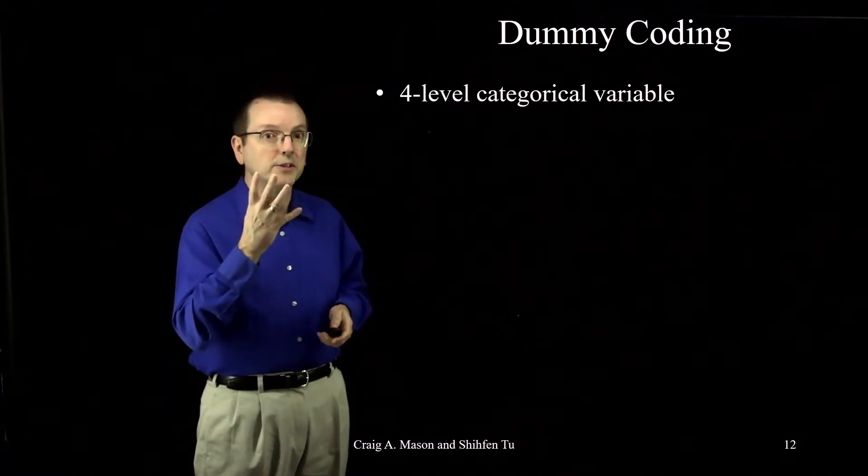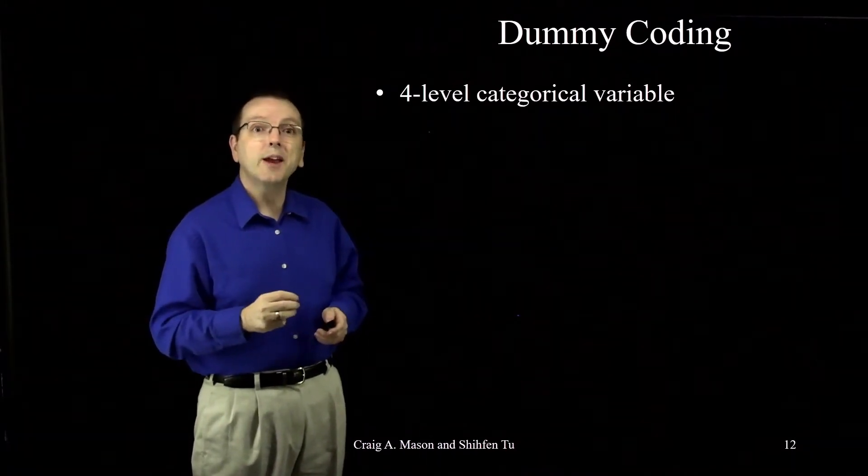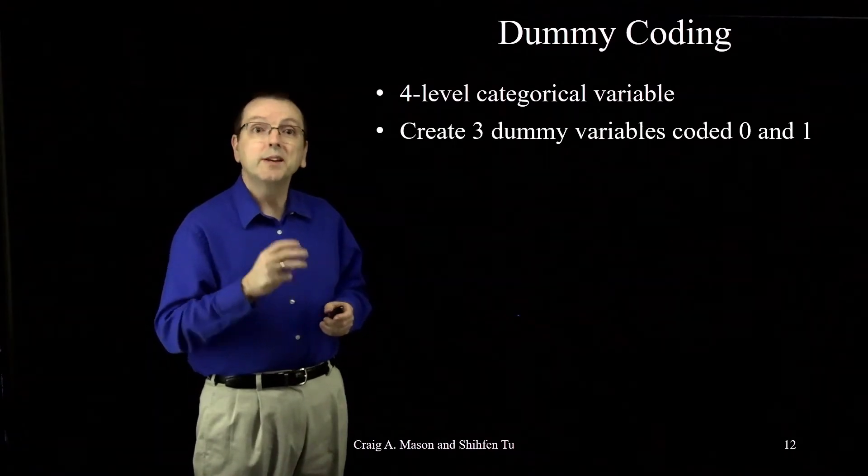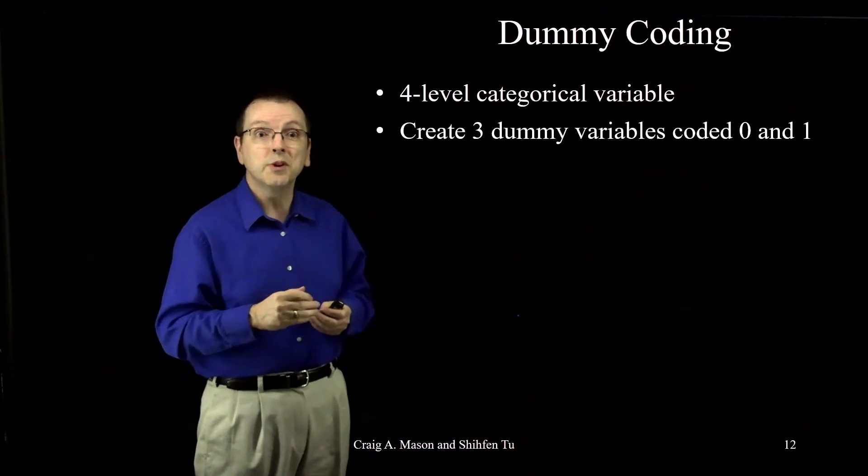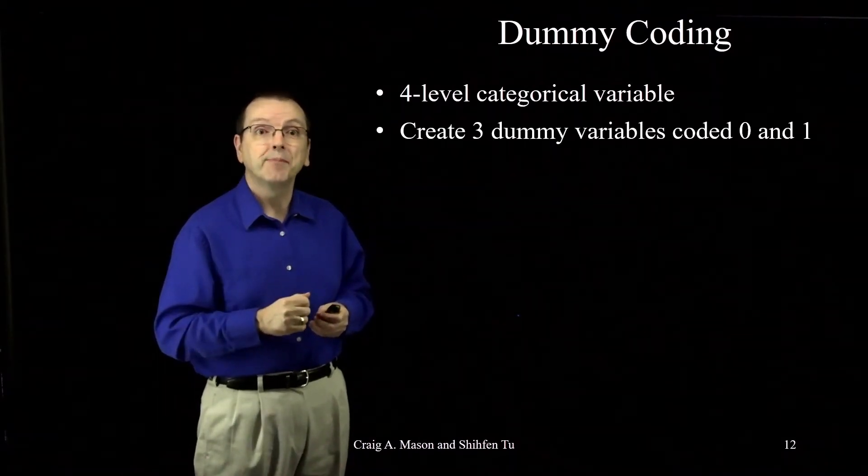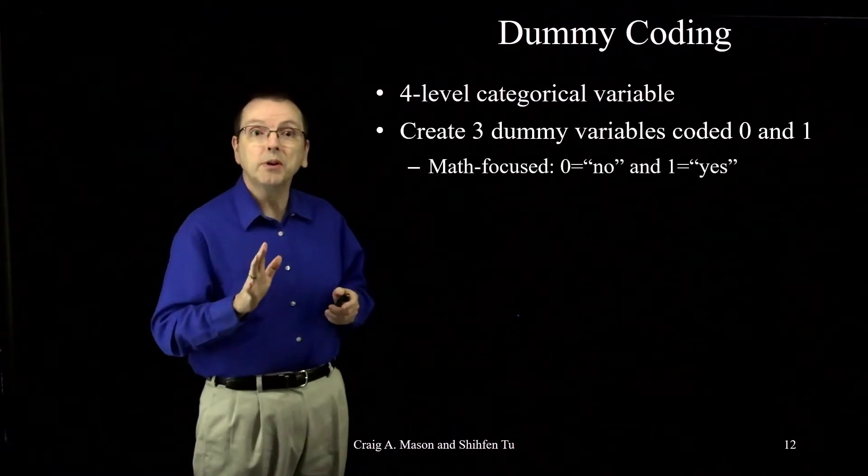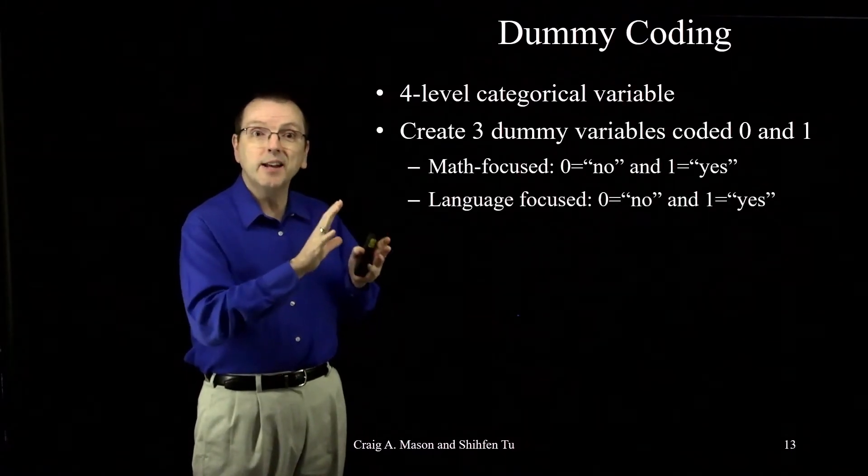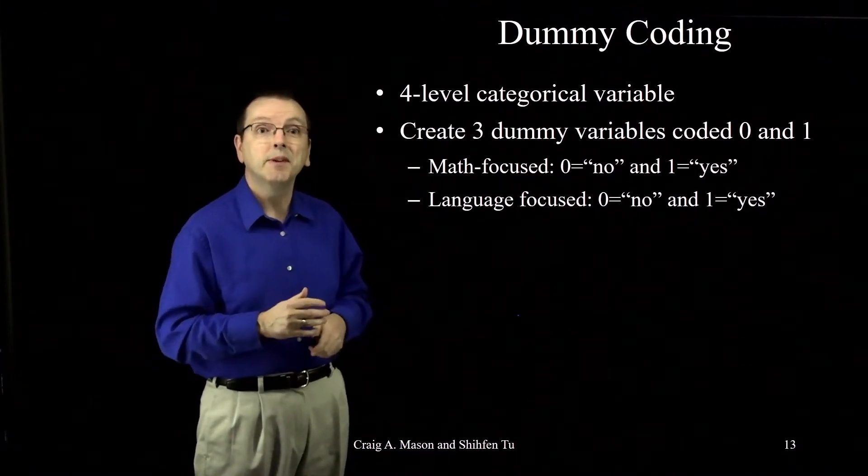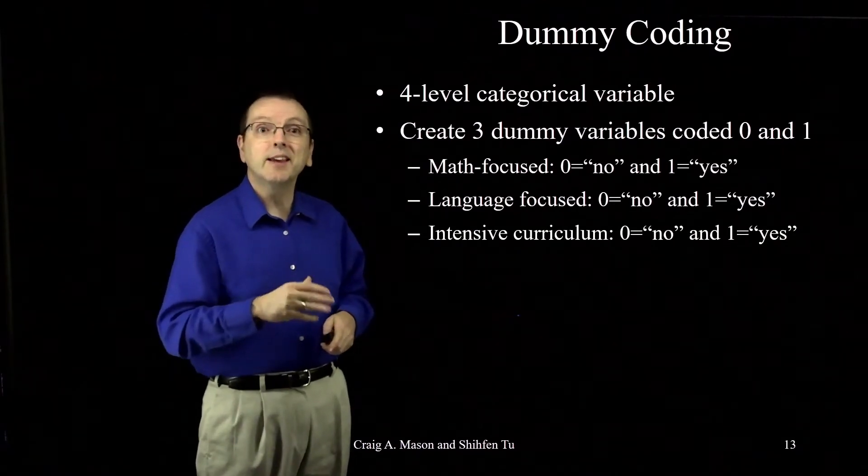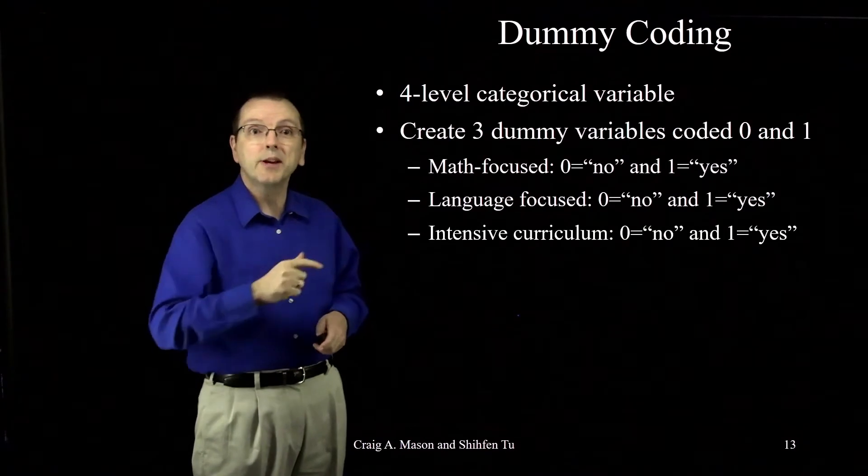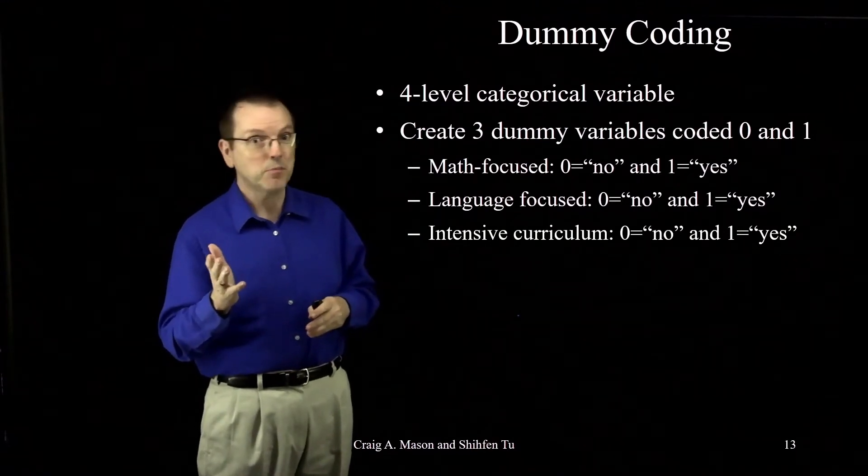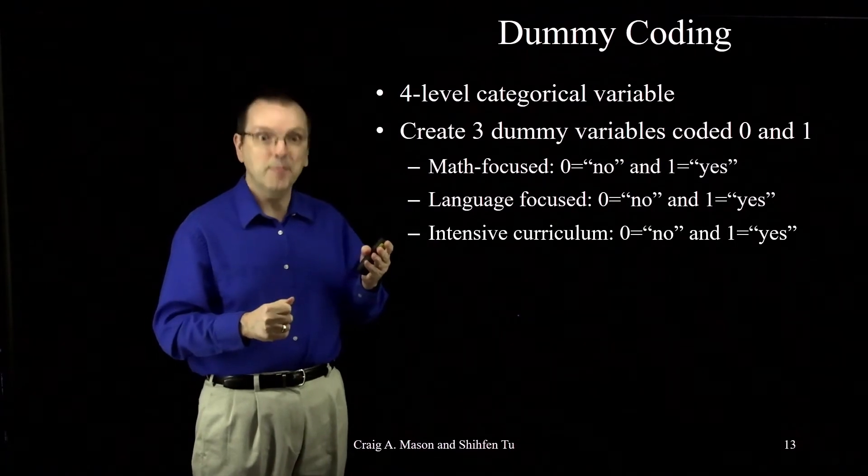We have four categories. So I'm going to create three dummy variables for three of these programs, with the dummy variables coded as zero or one indicating that a student belongs to that specific group or not. I'm going to make one dummy variable that indicates a child is in the math-focused curriculum, a second dummy variable for the language-focused curriculum, and a third dummy variable for the intensive curriculum. For each of these three dummy variables, everybody has either a value of zero, meaning nope, not in that program, or a value of one, meaning yes, I'm in that program.